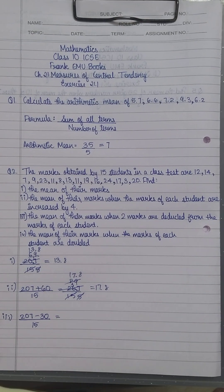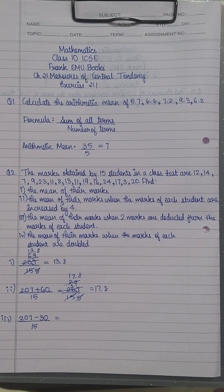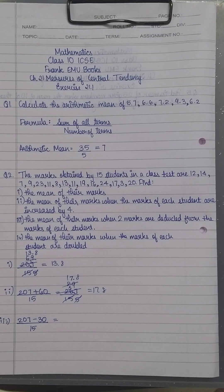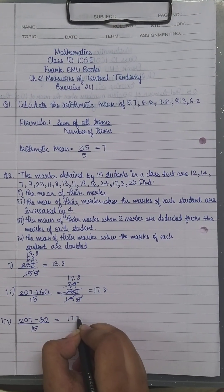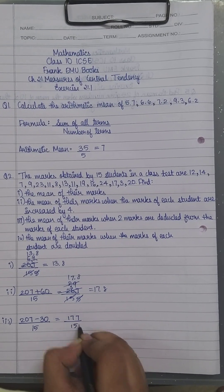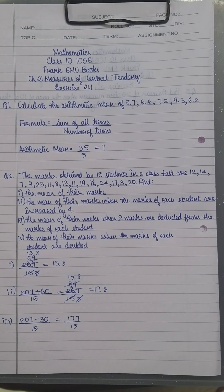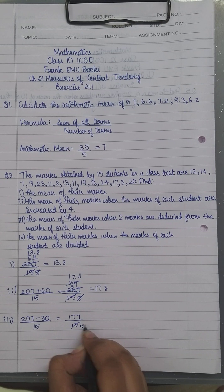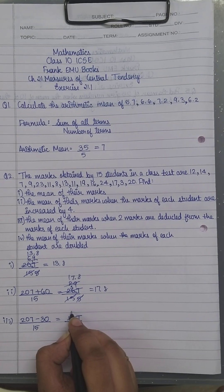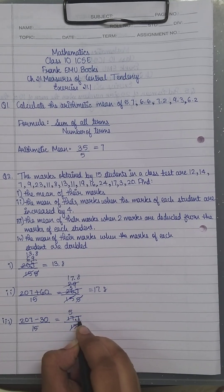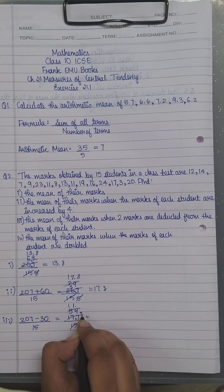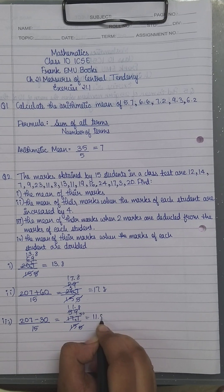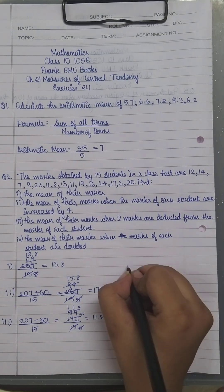Now, 207 minus 30 equals 177 upon 15. Both are divisible by 3, so you have 3×5=15, 3×5=15, 3×9=27. Simplifying: 5×1=5, 5×1=5, and 14 remains. So you have 11.8. Moving on to the last sub-question.